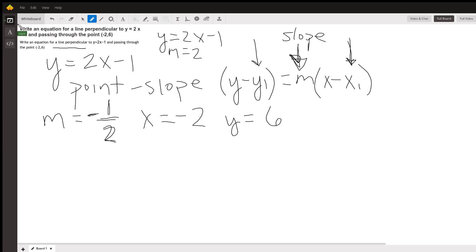The x-coordinate here is negative 2, and then the y-coordinate here is 6. So that's what they gave you here—they want the point (-2, 6) to be used and the slope that is perpendicular to the slope that they give you. The slope they give you is 2; the perpendicular slope is the negative reciprocal of it, which is negative one-half.